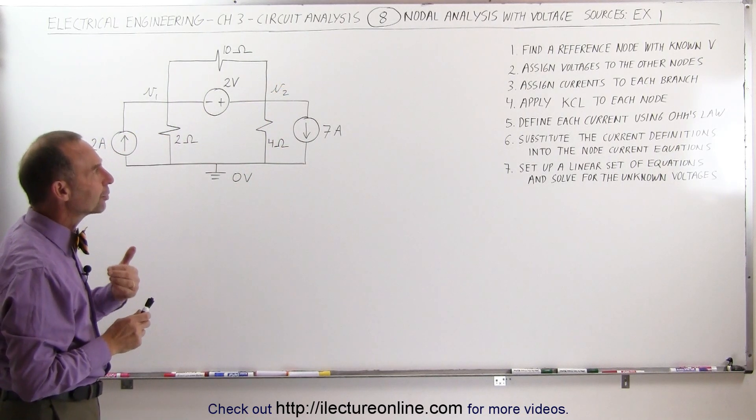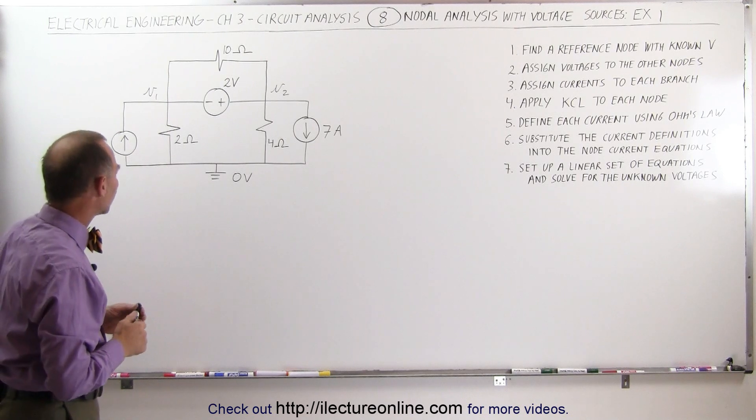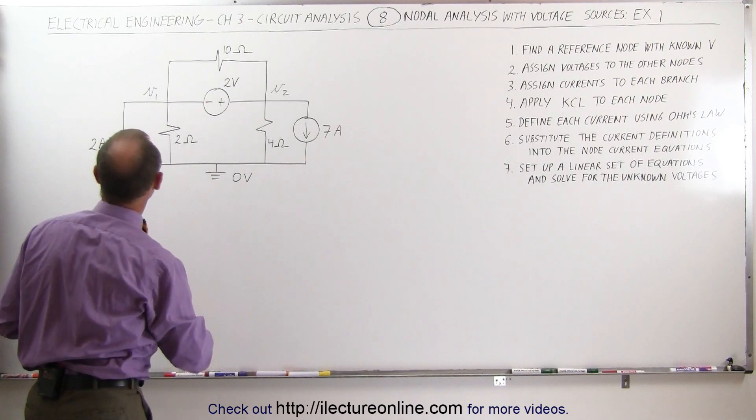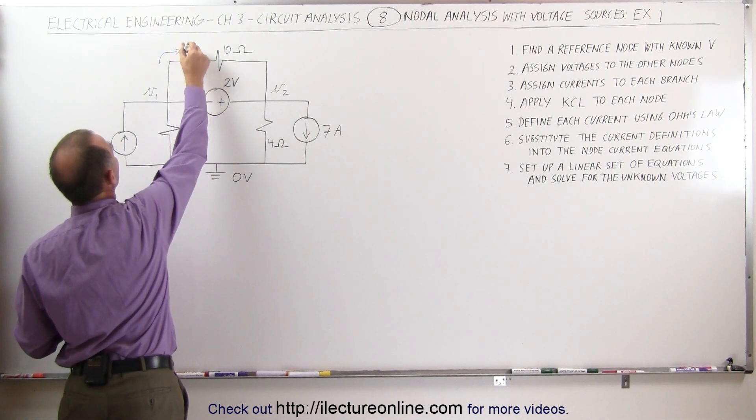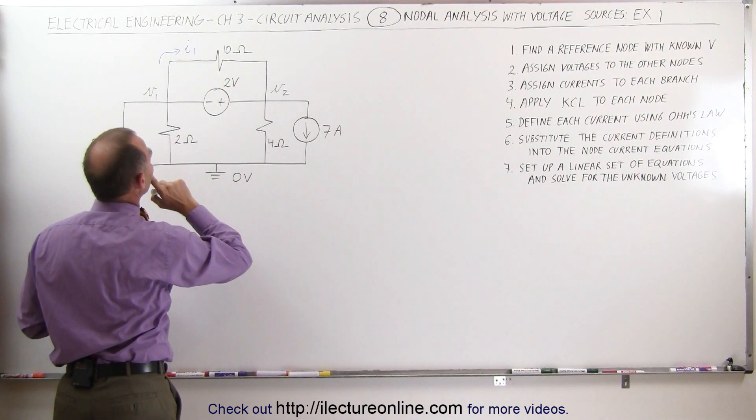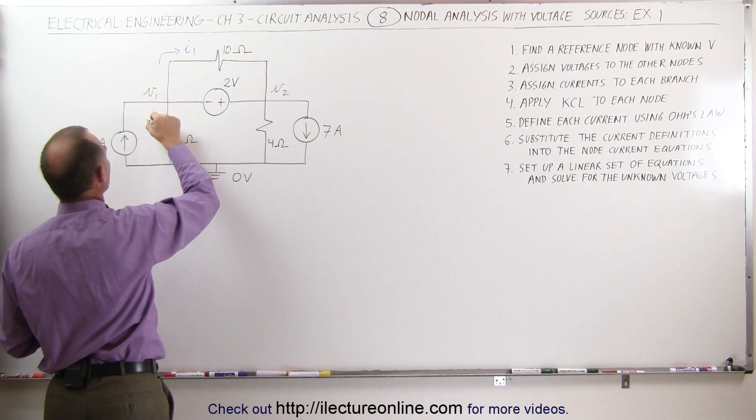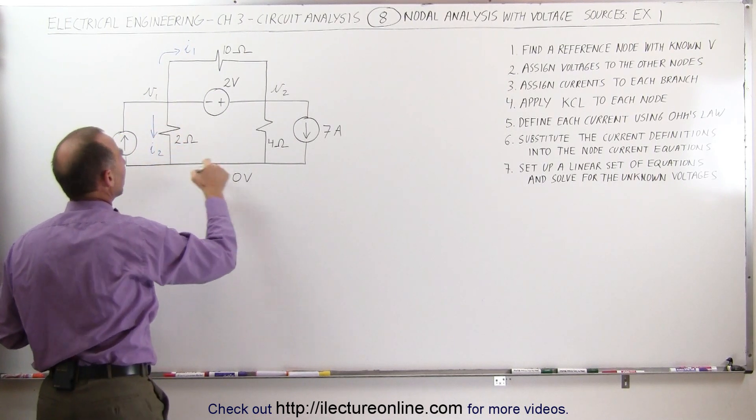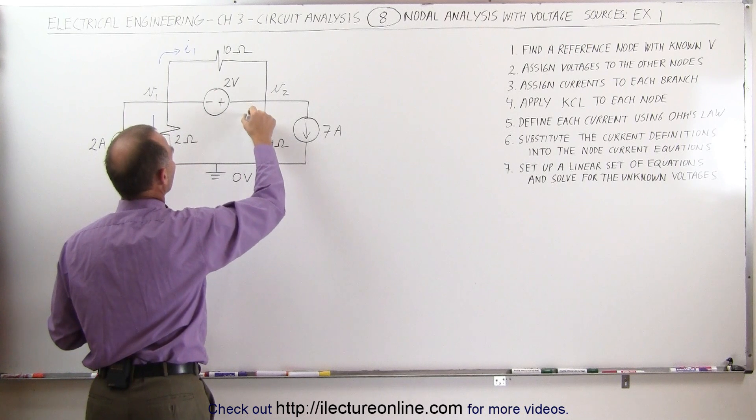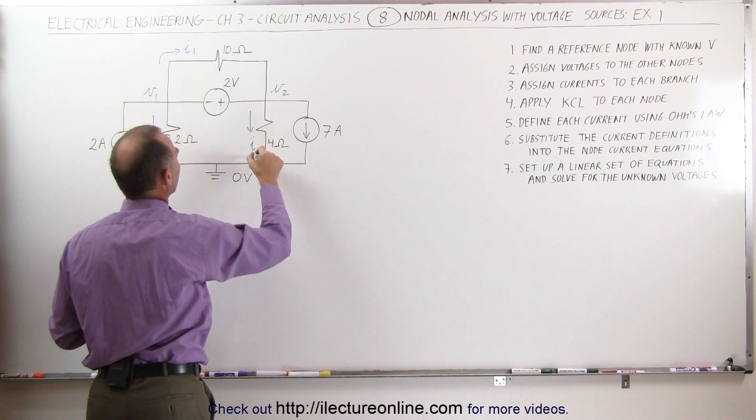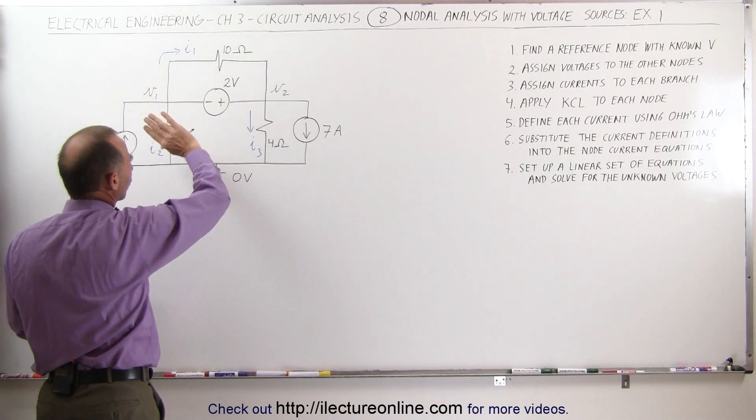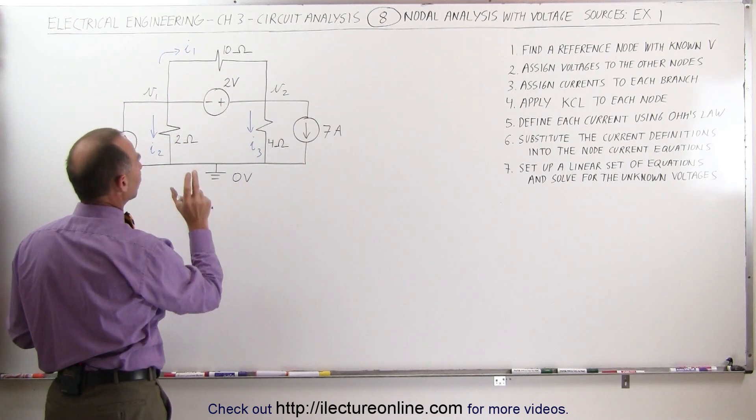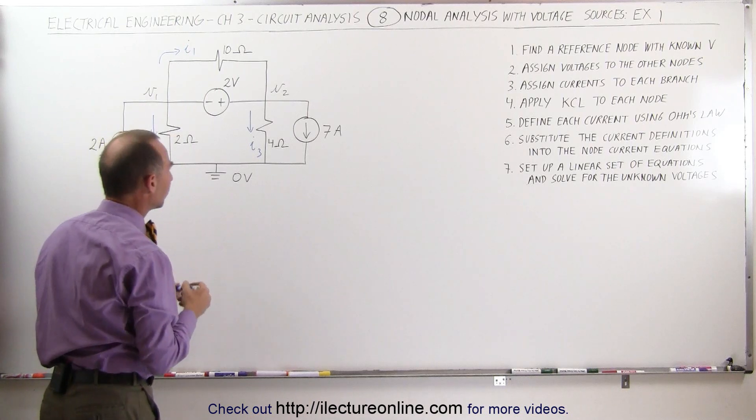Next, we want to assign currents to each of the branches. We have a current through this branch, let's call this current I1. We have a current through this branch, let's call this I2, and we have a current through this branch, let's call this I3. We have potential current to this branch, but since it's the voltage source, we'll just leave that alone. We only want to look at currents through the branches that have resistors.